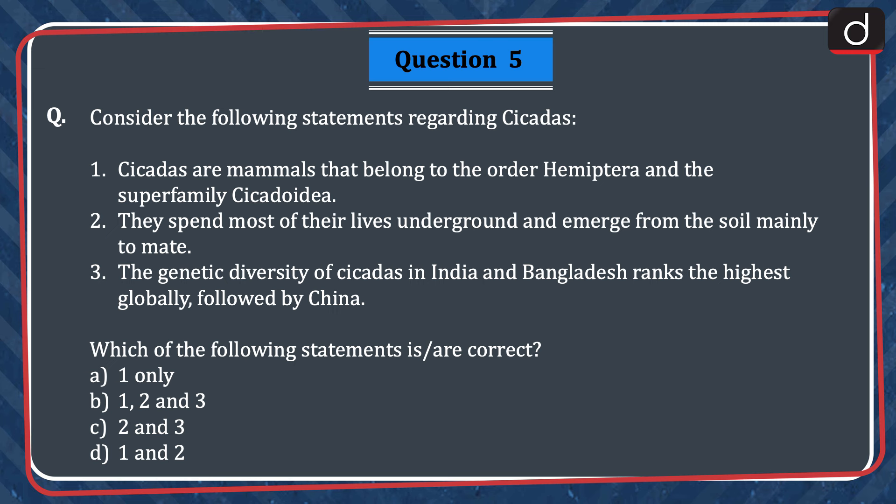Next question: consider the following statements regarding Cicadas. (1) Cicadas are mammals that belong to the order Hemiptera and the superfamily Cicadoidea. (2) They spend most of their lives underground and emerge from the soil mainly to mate. (3) The genetic diversity of Cicadas in India and Bangladesh ranks the highest globally, followed by China. Which statements are correct? Options: (A) one only, (B) one, two and three, (C) two and three, or (D) one and two. The correct answer is option C — two and three.